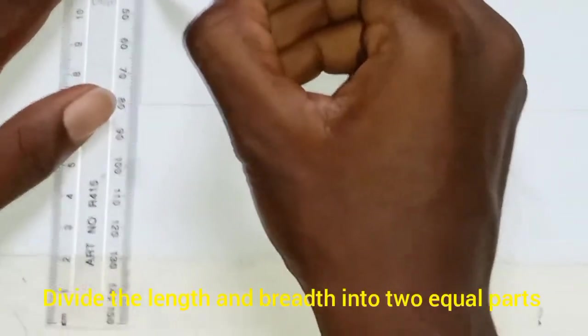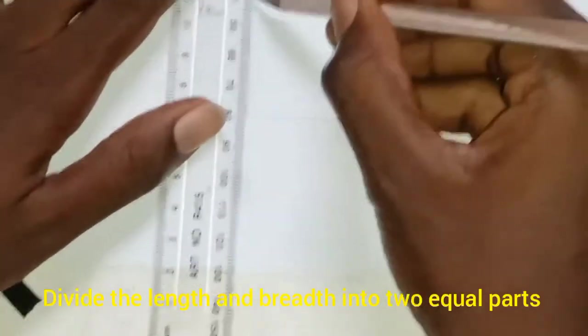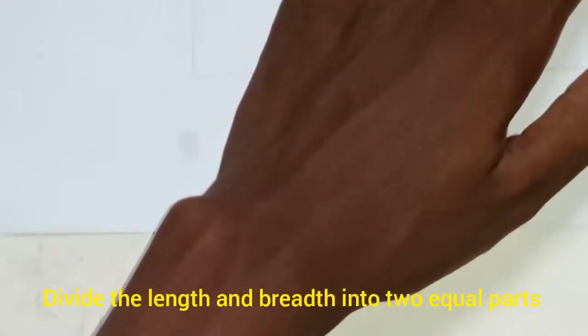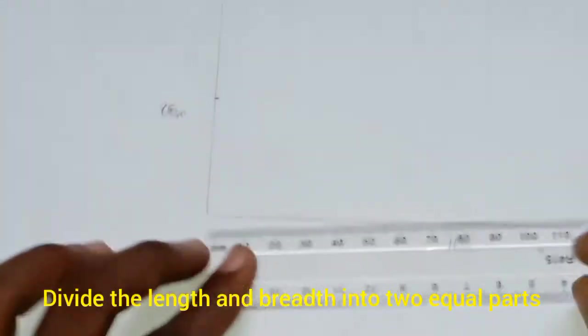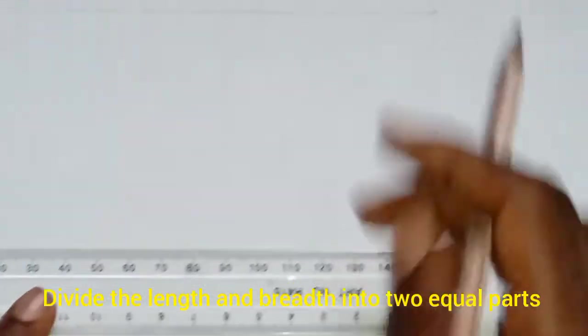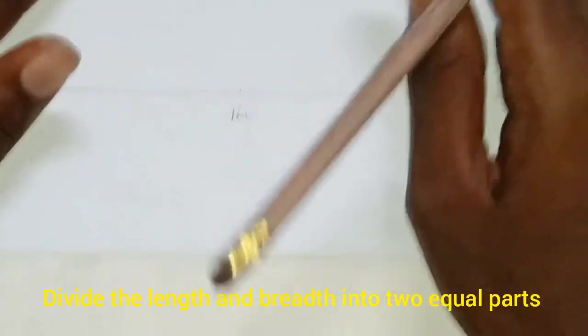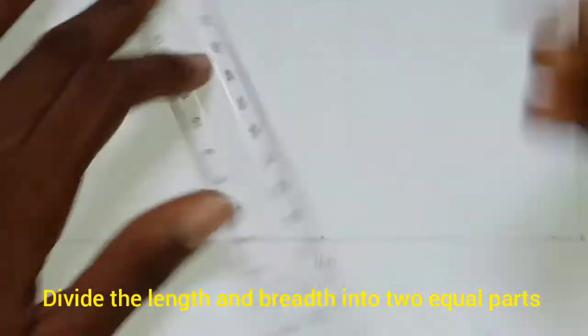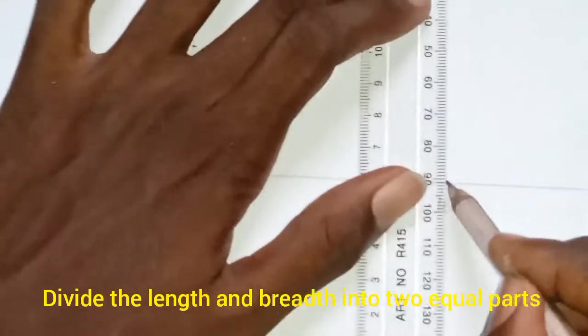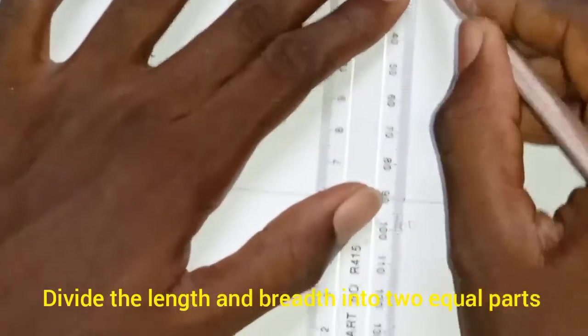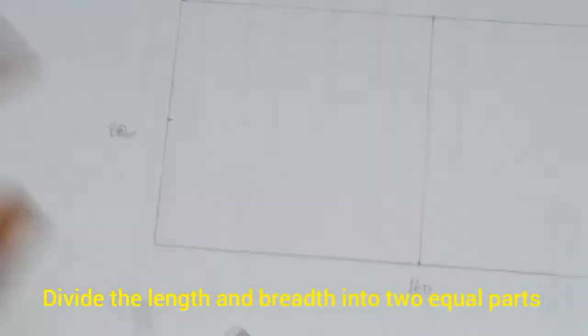Now we have gotten our square. This distance is 160. So next thing to do is to divide this part into two equal parts. This is 160, half is 80. This is 80, half is 40. So we join them.